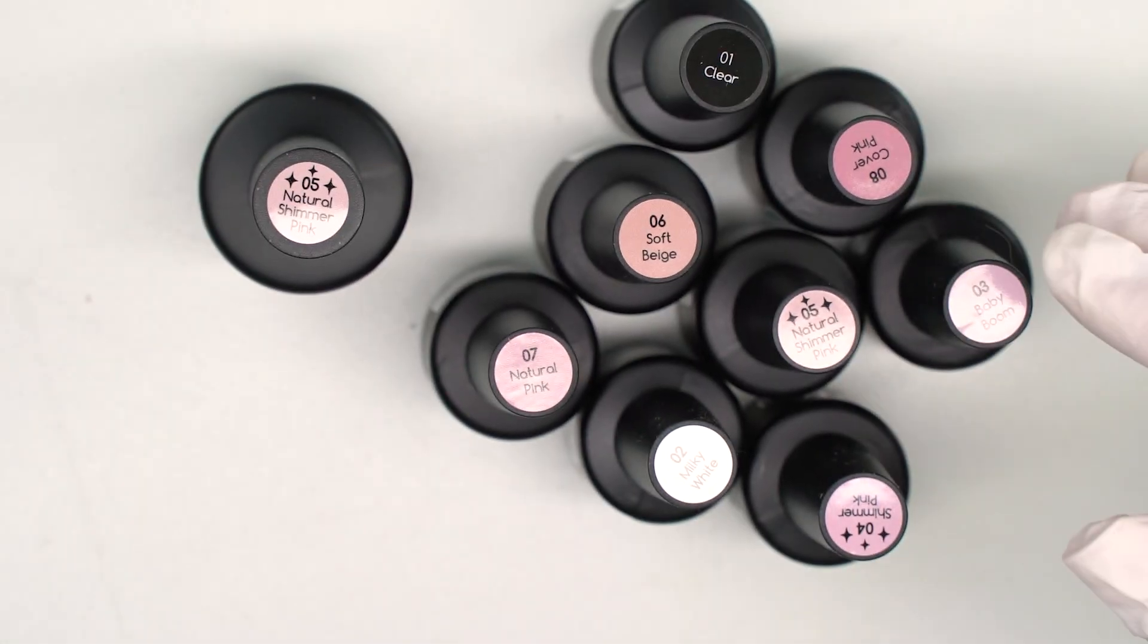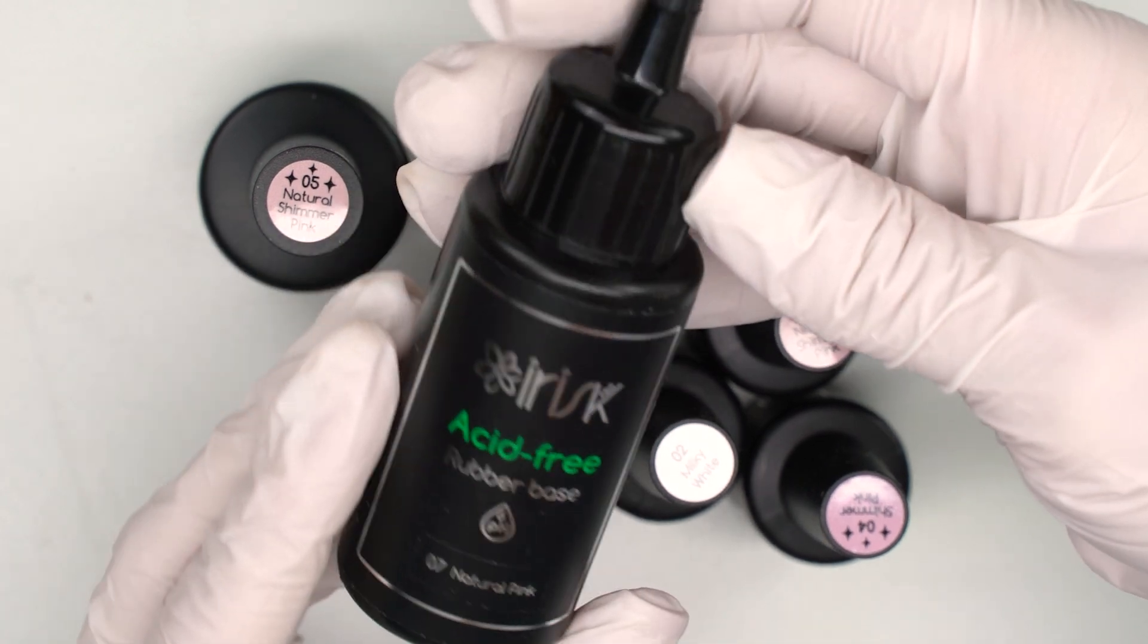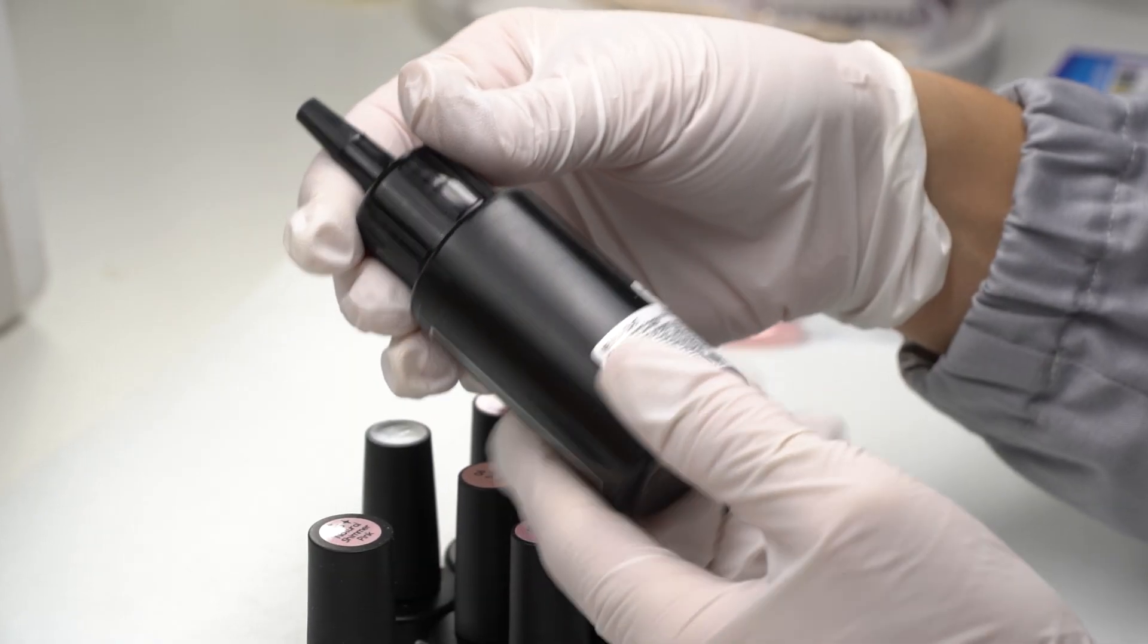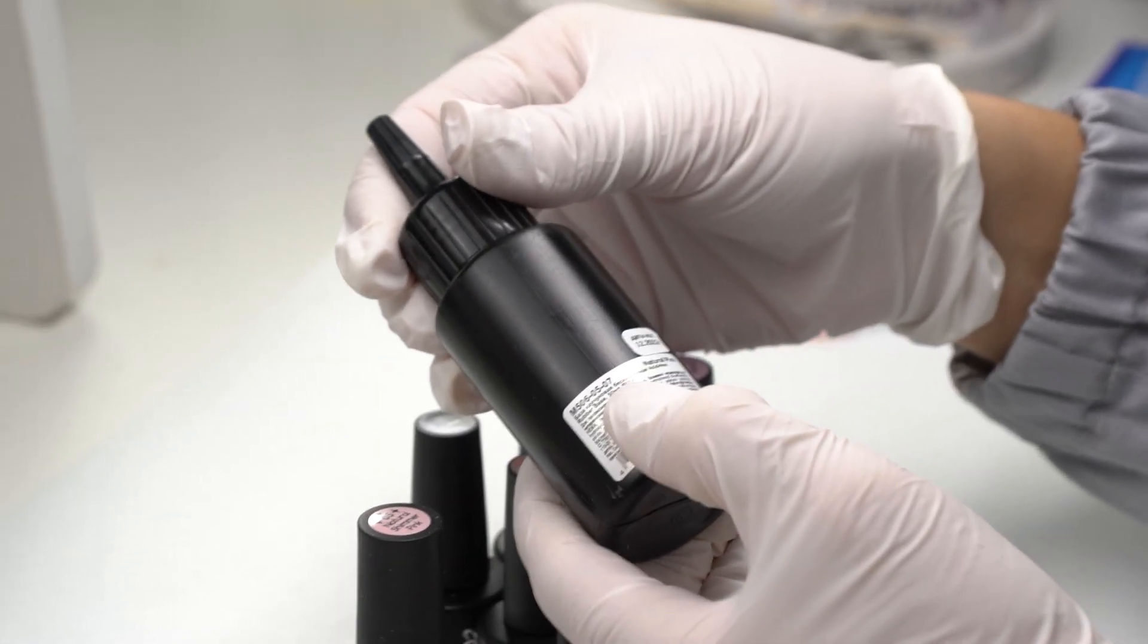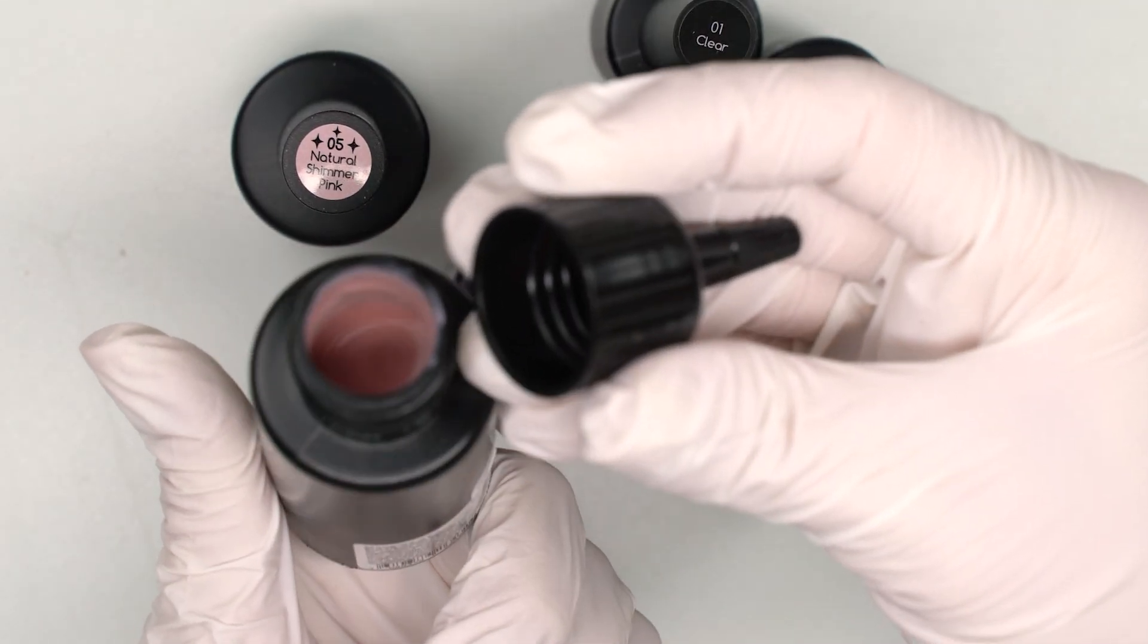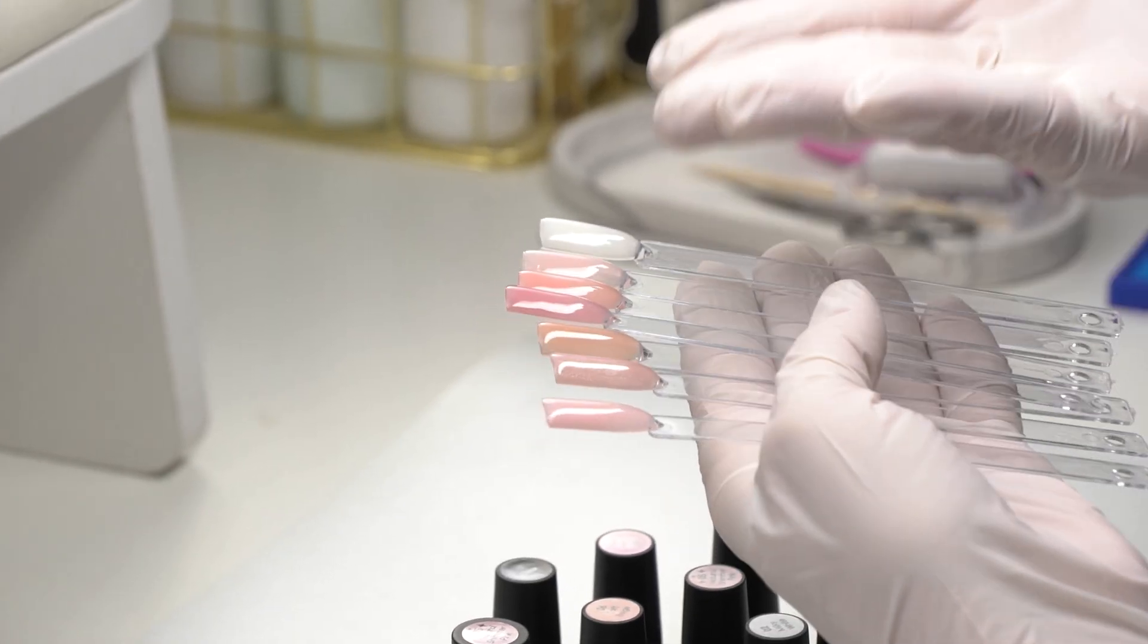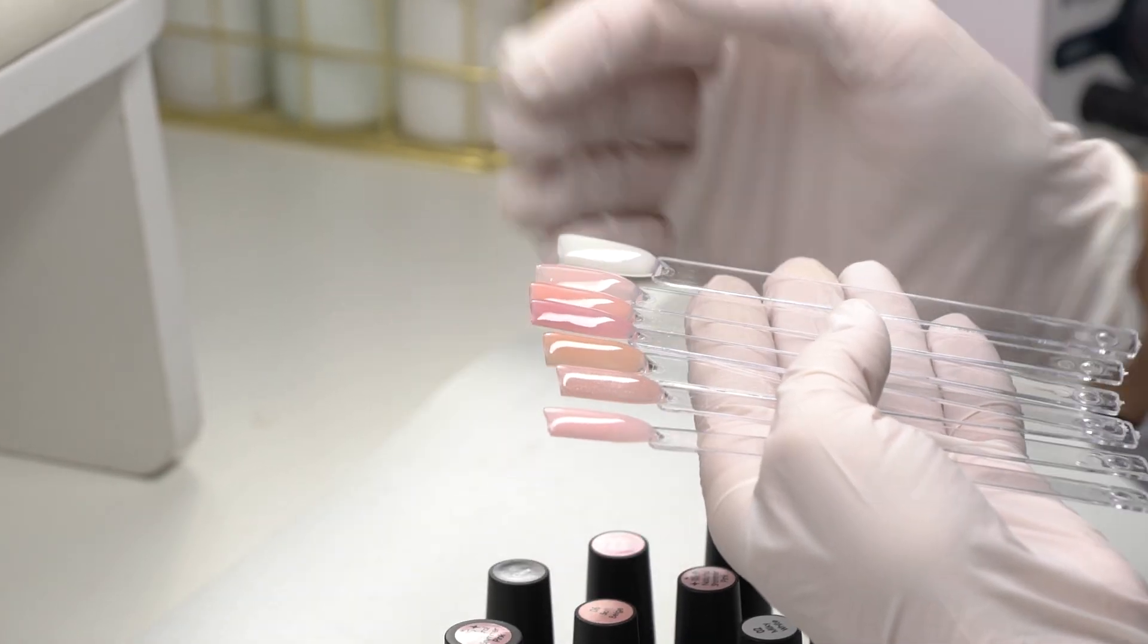The base coats come in small, medium, and large bottles. Large ones are great for busy nail techs with lots of clients. One can also pour some into smaller bottles. There are nude, shimmery, milky, and clear ones.